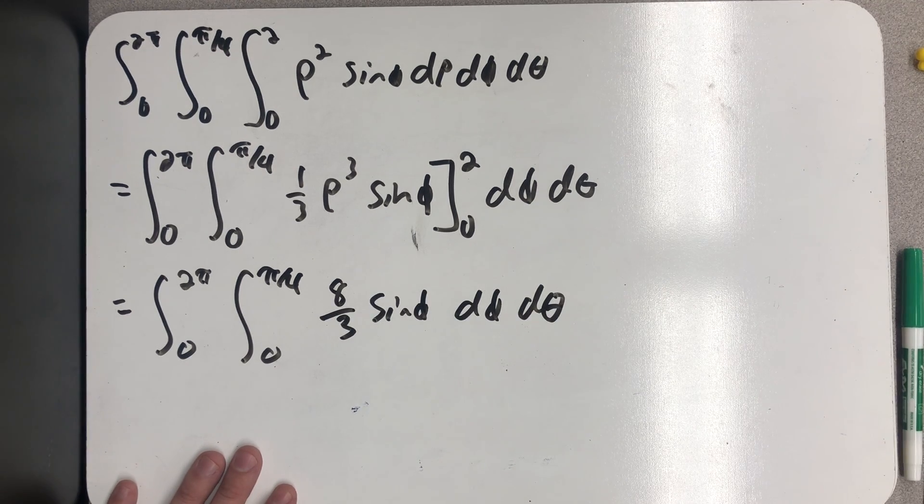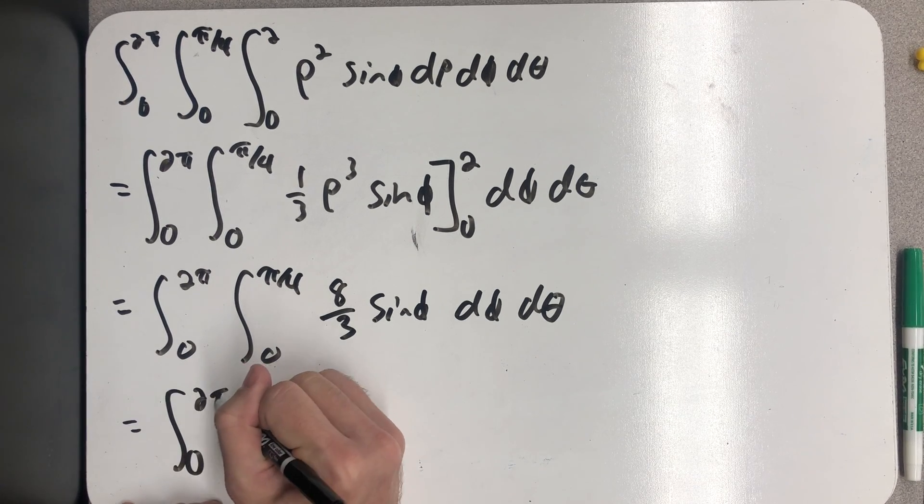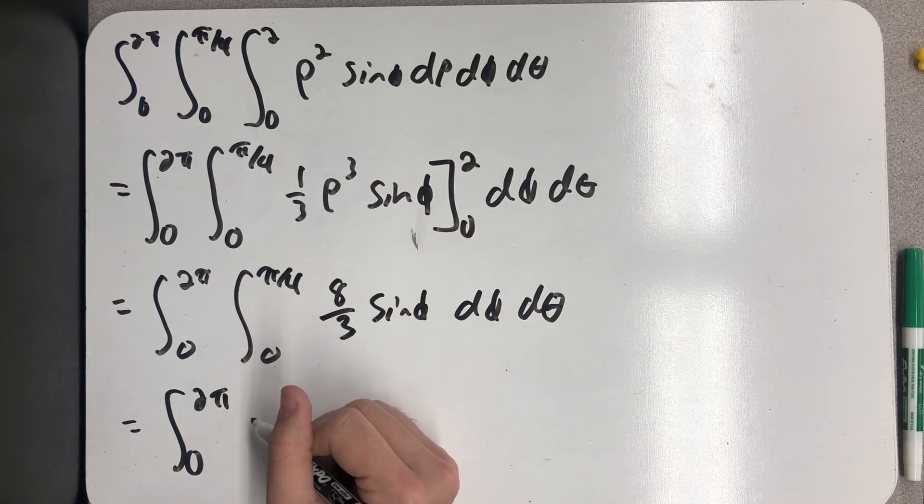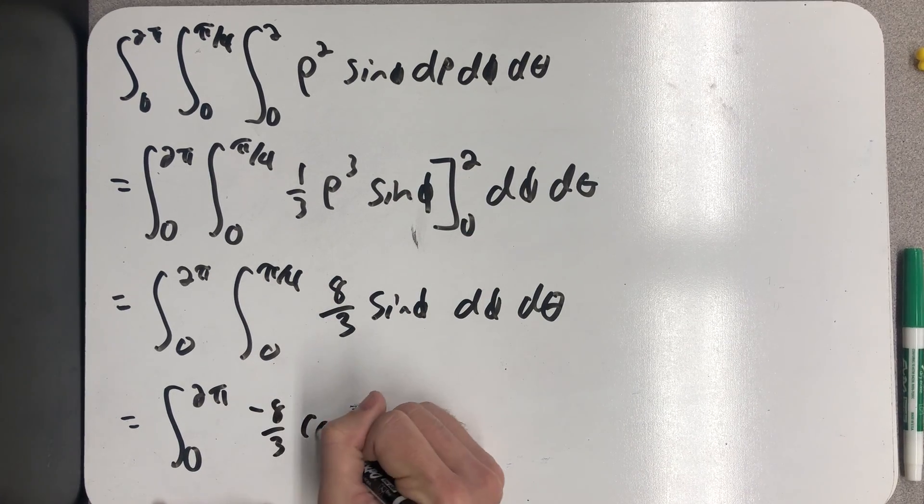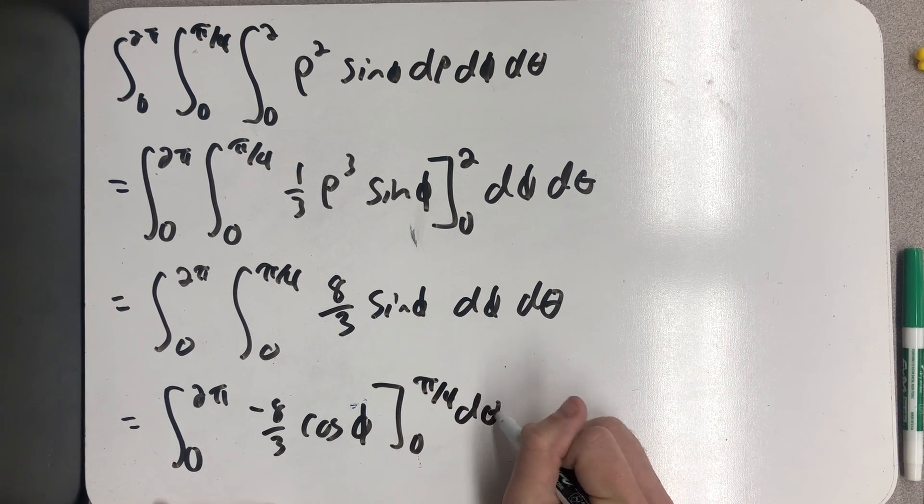So now we just need to integrate with respect to phi. So I will get minus 8 thirds cosine phi evaluated from 0 to pi fourths, d theta.